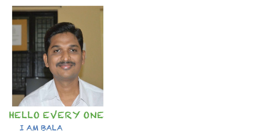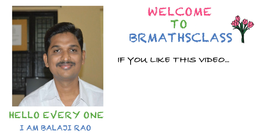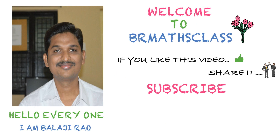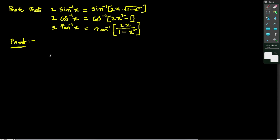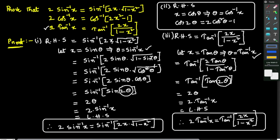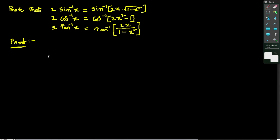Hello everyone, I am Balaji Rao. Welcome to BR Max Class. If you like this video, share it with your friends and subscribe to my YouTube channel to get more updates. In this class, we prove these three results: 2 sin⁻¹x = sin⁻¹(2x√(1−x²)), 2 cos⁻¹x = cos⁻¹(2x²−1), and 2 tan⁻¹x = tan⁻¹(2x/(1−x²)). Let's start the first one.